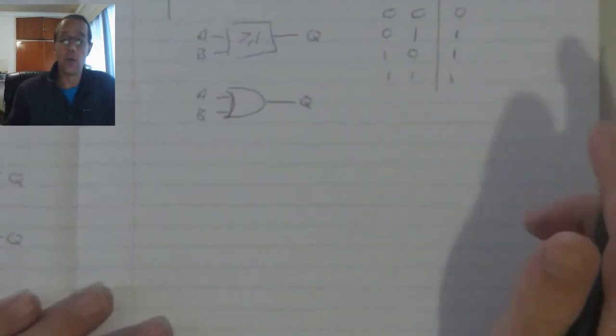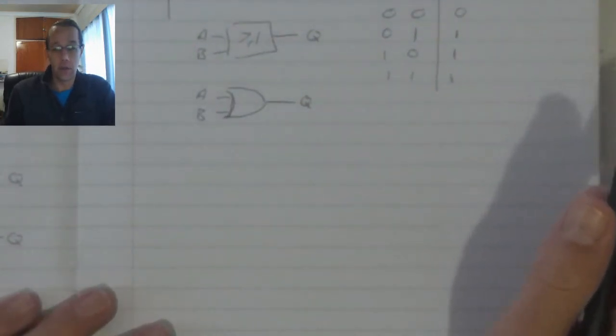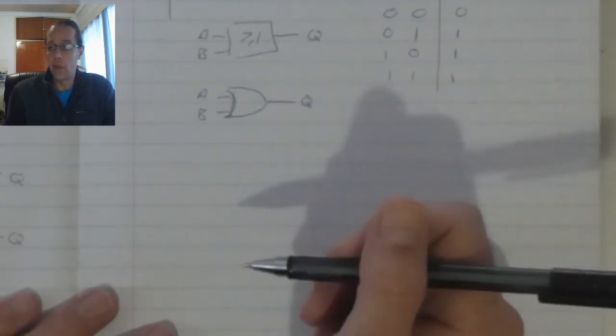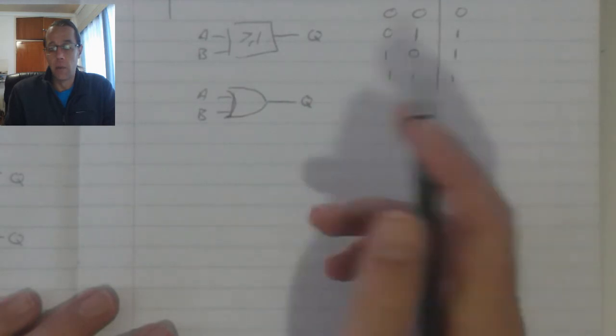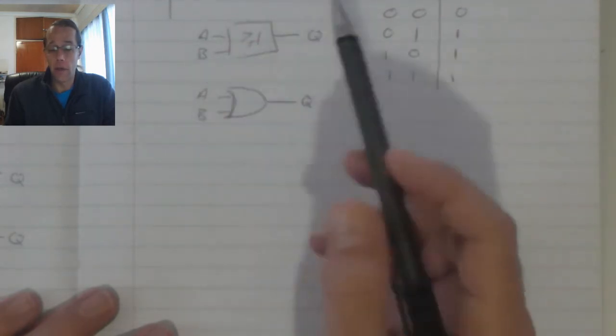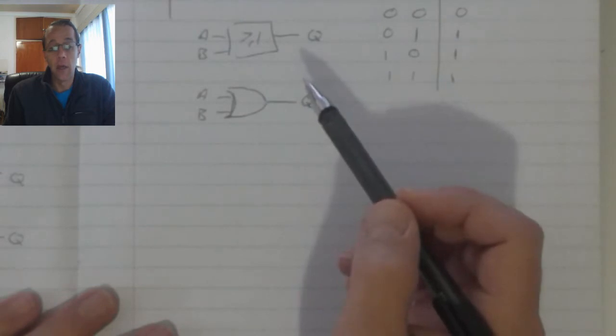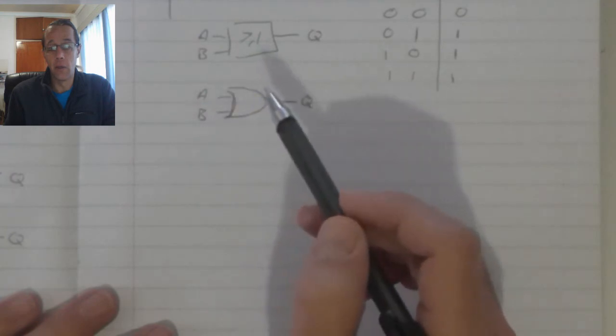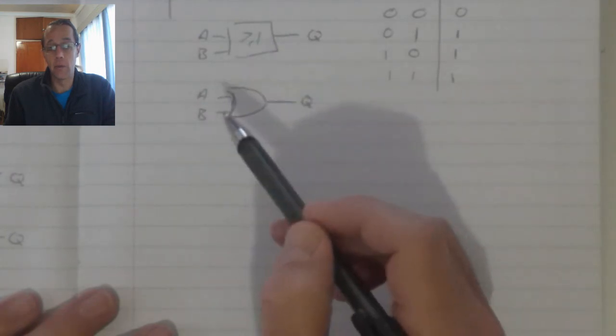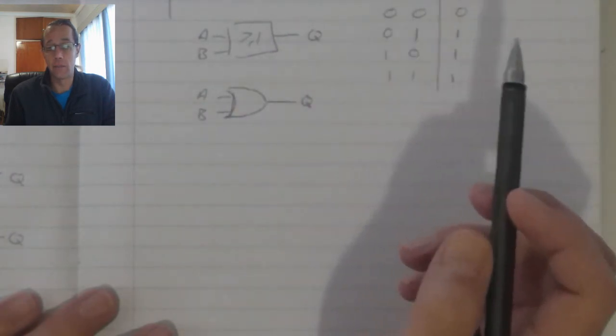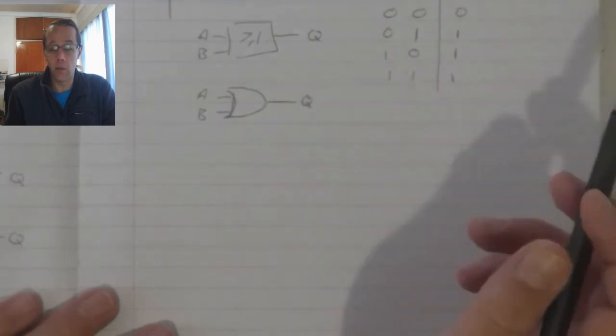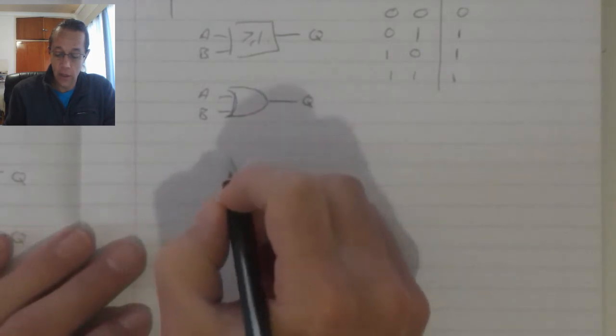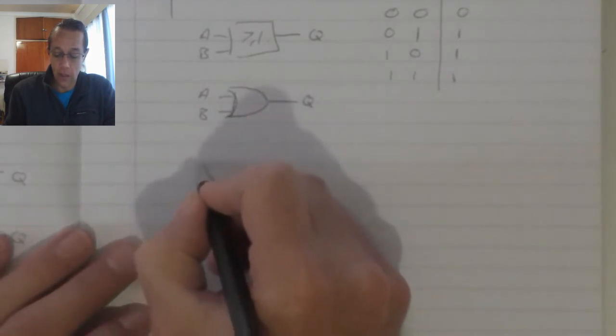Now, sometimes it is necessary to invert a function. For example, the overload. When the overload is triggered, it's supposed to turn the direct line starter off. But, let's say we want to activate or use the overload to activate an output to indicate that that is what the fault in the circuit is. So, then we use the invert function.